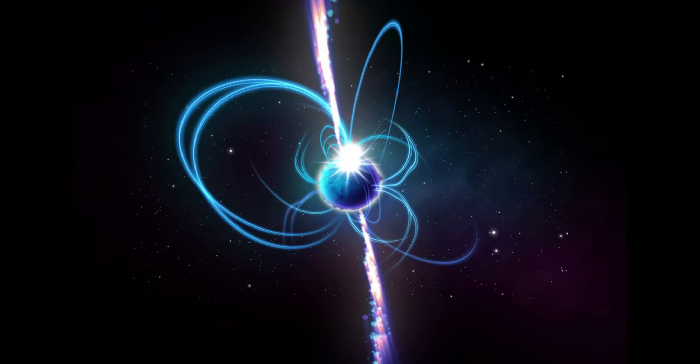A neutron star typically would have a mass that's perhaps half a million times the mass of the Earth, but they're only about 20 kilometers or 12 miles across. A handful of material from this star will weigh as much as Mount Everest.